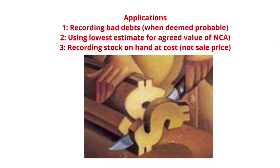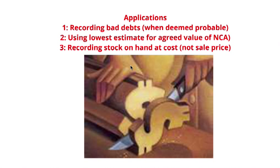Applications of conservatism: if we've exhausted all means deemed possible to recover a debt from a debtor, we write it off as a bad debt to prevent understating our expenses. If given estimates on the agreed value of a non-current asset contributed by the owner, we go with the lowest estimated figure to prevent overstating the value of assets. We record stock on hand in the balance sheet at cost, not the sale price, because it's not certain we'll sell it at the marked-up value — it could be stolen, become obsolete, damaged, etc.